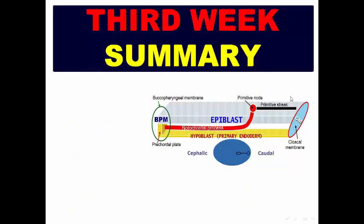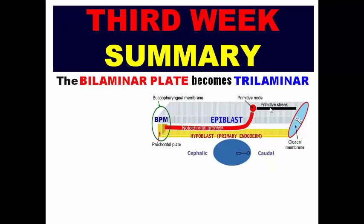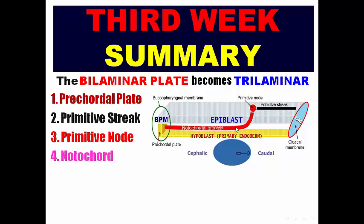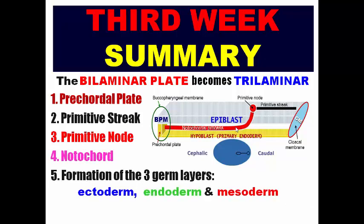Summary of the changes in the third week, or gastrulation: the bilaminar plate becomes trilaminar. The key events are: formation of the pre-chordal plate, the primitive streak, the primitive node, the notochord, the three germ layers — ectoderm, endoderm, and mesoderm — and the formation of the allantois.